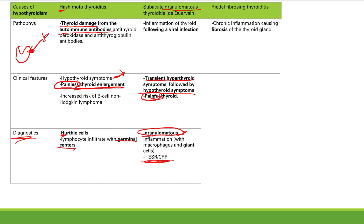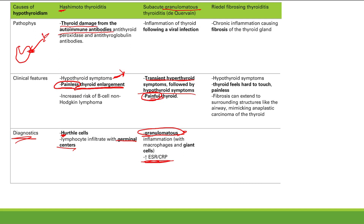The next cause is Riedel's fibrosing thyroiditis, due to chronic inflammation that causes fibrosis of the thyroid gland. Fibrosis means the gland doesn't work well, leading to decreased thyroid hormone and hypothyroid symptoms. On exam, this one feels hard to the touch and is painless — the fibrosis makes it feel hard.